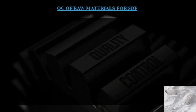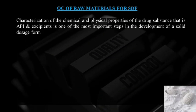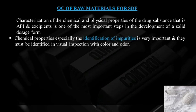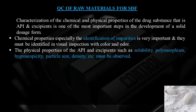Quality control of raw materials for solid dosage forms — characterization of chemical and physical properties of the drug substance, that is the API and excipients, is one of the most important steps in development of solid dosage forms. Chemical properties, especially the identification of impurities, are very important and must be identified in visual inspection with color and odor. Physical properties of API and excipients such as solubility, polymorphism, hygroscopicity, particle size, and density must be observed.